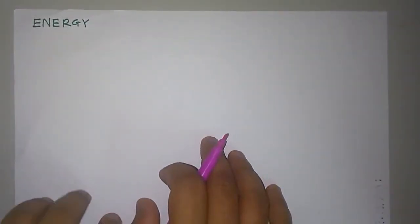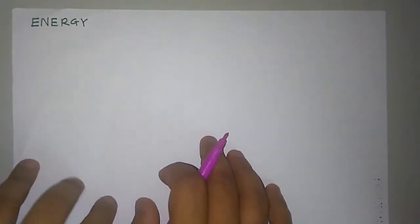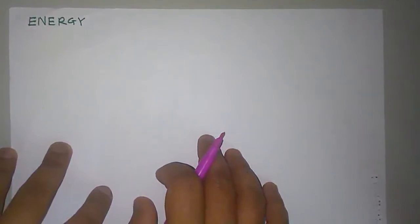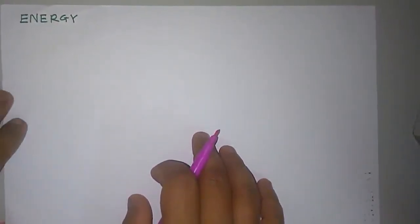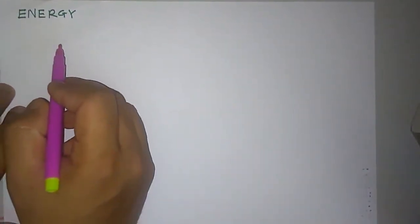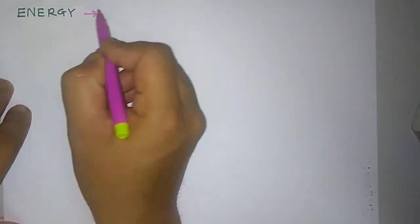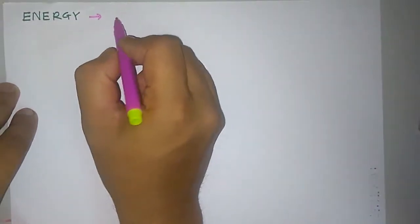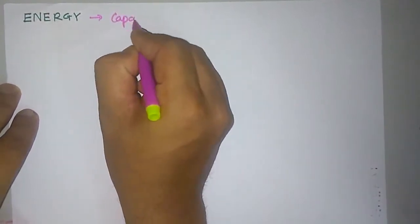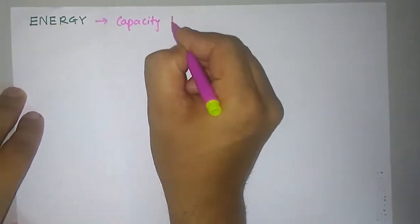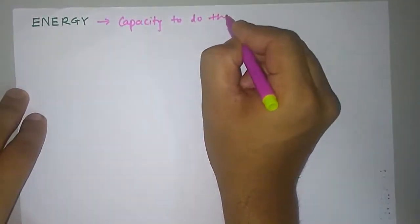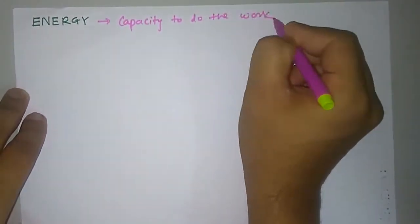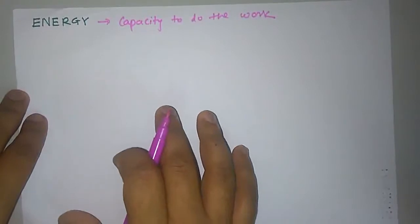The most important topic from this chapter is energy, after the work done by the different forces. Energy is defined as the capacity to do work. This is the simple definition of energy.